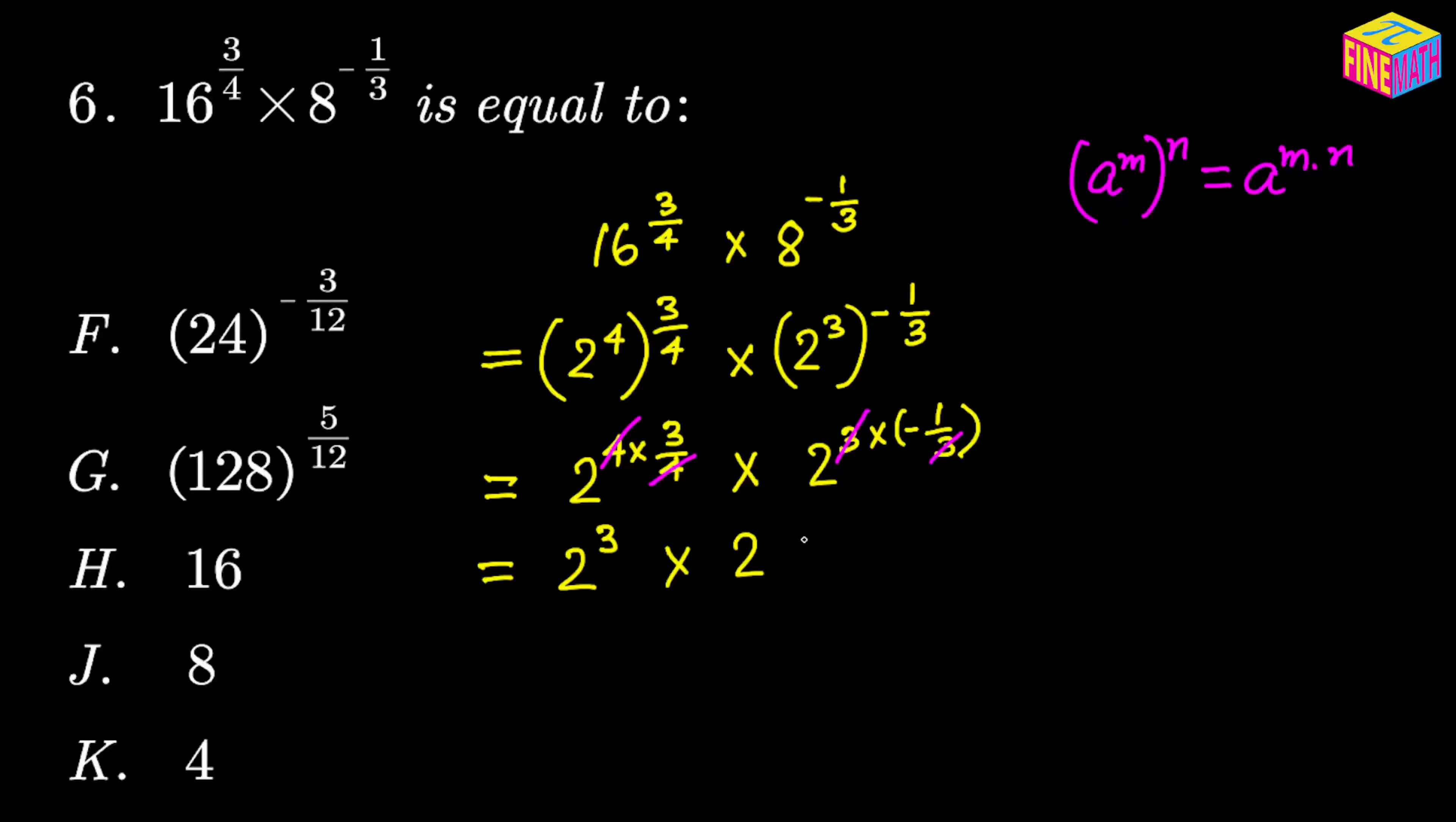From here, the first factor is 2 cubed, which is equal to 8. The second factor is 2 to the power negative 1. That means it is 1 over 2, whole to the power positive 1. This is nothing but the reciprocal of 2 with a positive 1 power, so we can write it as 1 over 2.